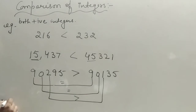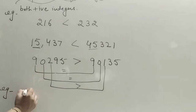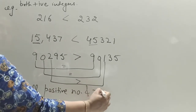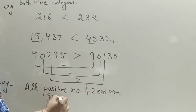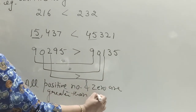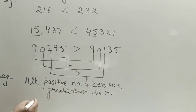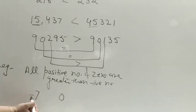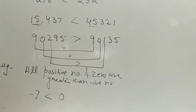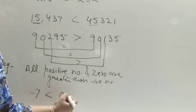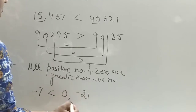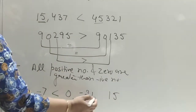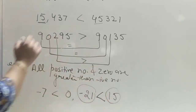The second rule: all positive numbers and zero are greater than negative numbers. For example, comparing minus 7 and 0 — zero is always greater than negative numbers. If you have 21 and minus 21, the positive number is always greater.